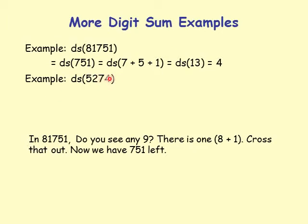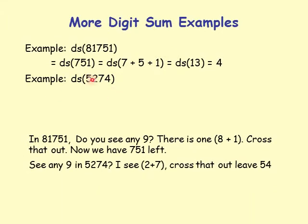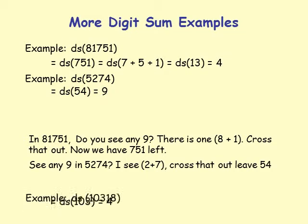Another example: 5274. See any 9? Yes, 2 plus 7 equals 9, so cross those out. Remaining digits are 5 and 4. Digit sum of 5 plus 4 equals 9.